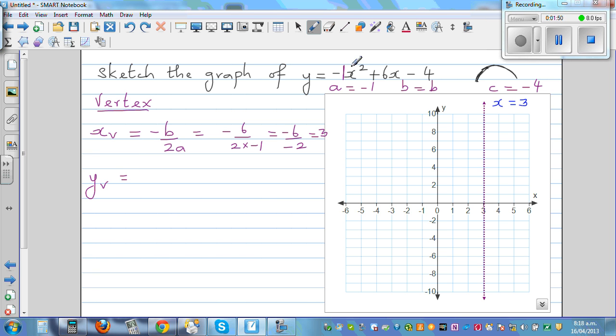So let's do without a calculator. So this is negative 9 plus 18 minus 4. Which is, what is negative, so this is 9 minus 4 which is 5.